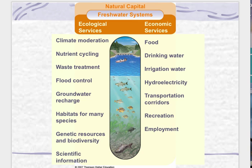Here you can see figure 6.14 in your textbook — the natural capital of freshwater ecosystems. On the left you have your ecological services, and on the right you have the economic services. You want to be able to memorize three of them on each side and justify an explanation with some type of relationship. For example, if you look at nutrient cycling as an ecological service, you can connect it to economic services and discuss nutrients such as carbon or nitrogen.